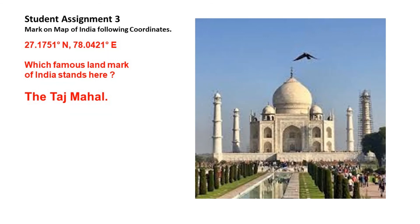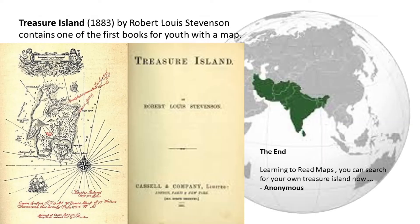An interesting fact before ending the chapter: 'Treasure Island' by Robert Louis Stevenson is one of the first books for youth to include a map. If you know any other books that include a map with latitudes and longitudes, please share the name in the comments below.